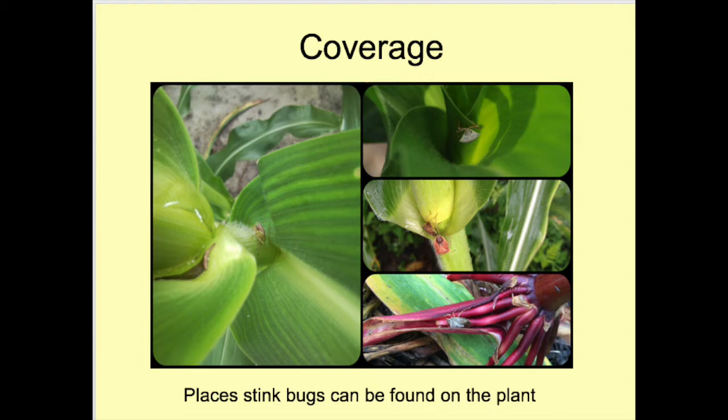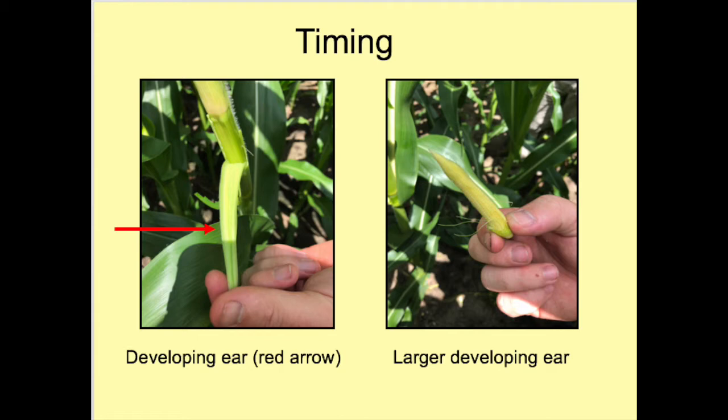The first is coverage. It is critical to deliver insecticides where the stink bugs are located, as seen in these images. Ensure canopy penetration with the proper nozzle, pressure, and volume selection.